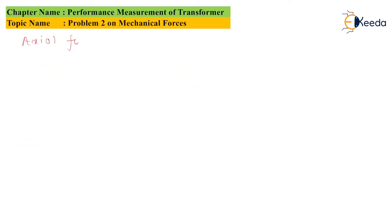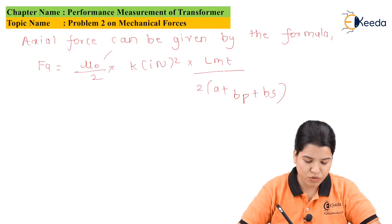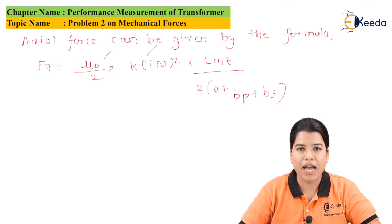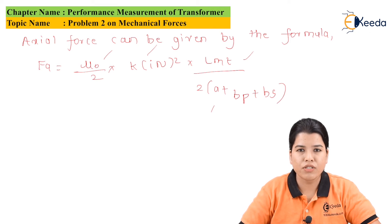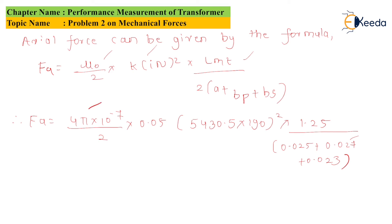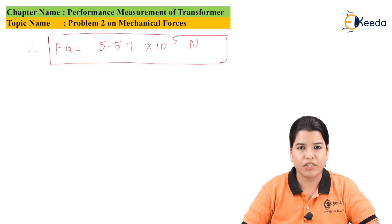Now let us find the axial force for the second condition. The axial force Fa is given by: Fa = (μ₀ / 2) × K × In² × LMT / (2 × (a + Bp + Bs)). Substituting the values: Fa = (4π × 10⁻⁷ / 2) × 0.05 × 5430.5 × 190² × 1.25 / (0.025 + 0.027 + 0.023). After solving, Fa = 5.57 × 10⁵ Newton.